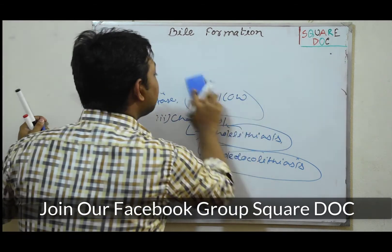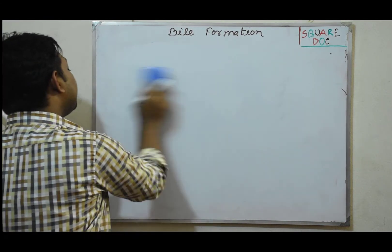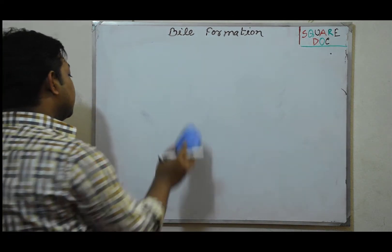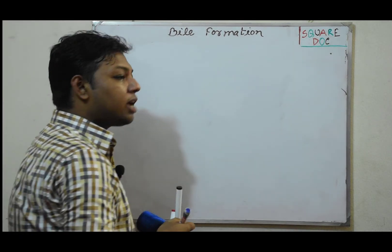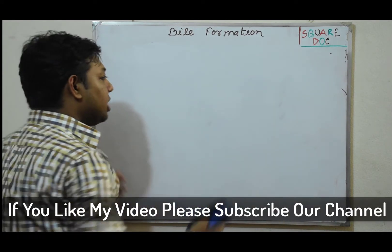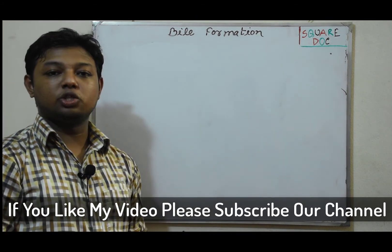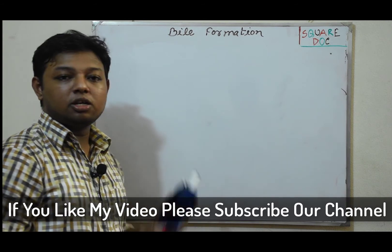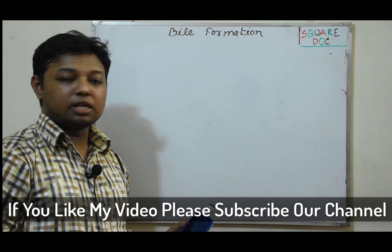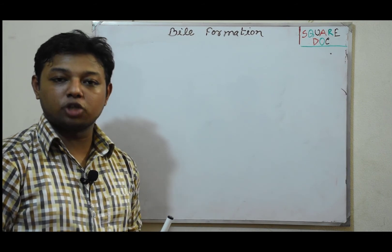In summary, bile components are: water and solid. Solid has inorganic (sodium, potassium, calcium, bicarbonate, chloride) and organic components — bile salt, bile pigment, cholesterol, and alkaline phosphatase. Please like and share. Subscribe to our YouTube channel Squaredoc. Follow and visit our website and Facebook group Squaredoc. Thank you.